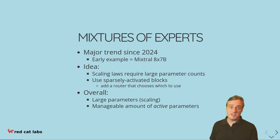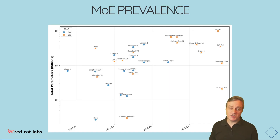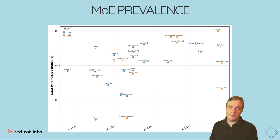Once you have this sparse activation, you use a router to choose which pieces are activated. The net result of this is that while you have a large number of parameters in a model — which appeals to the scaling laws — you also have a manageable number of active parameters, which can make inference faster. This is a quick chart which shows the total number of parameters over time.